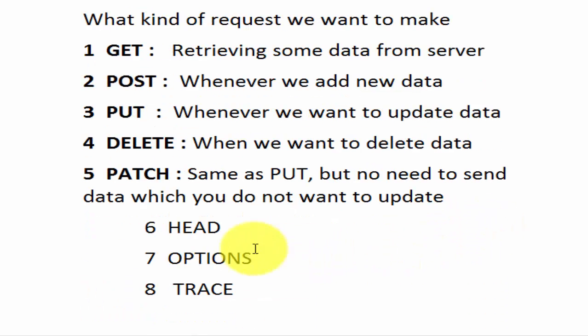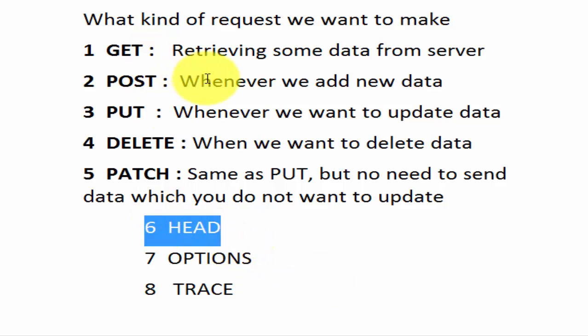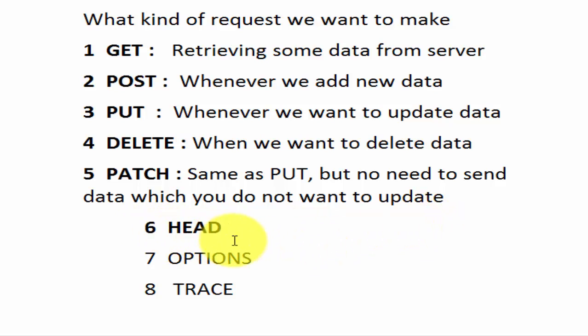Now we have three more methods: HEAD, OPTIONS, and TRACE, which are used very rarely. The HEAD method is used whenever you want to get only the header in the response. When sending a request to the server, we get two sections: header and body. HEAD is similar to GET, but we only get the header — not the body. Whenever we want to check whether we are getting the correct response code without validating the body, we use HEAD method.